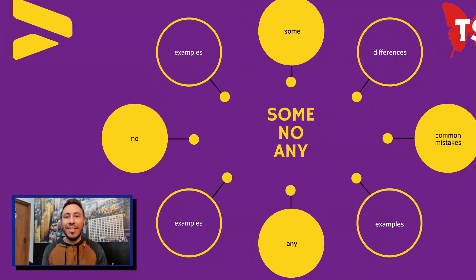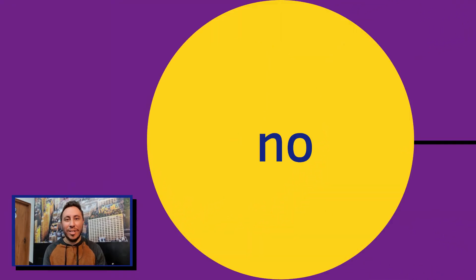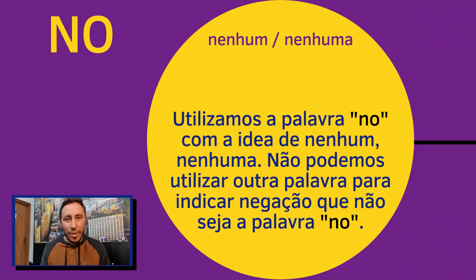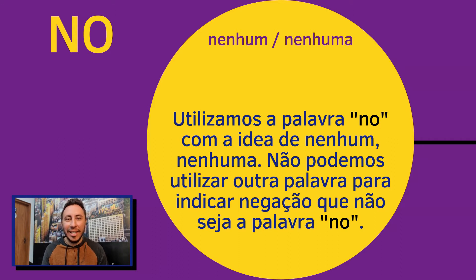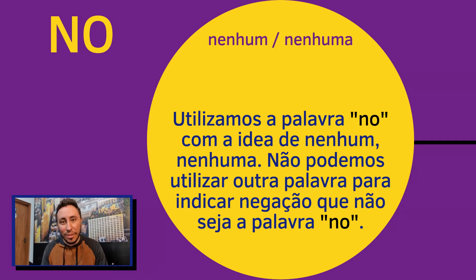Next word. Now let's take a look at the word no. The word no has only two possible translations: nenhum or nenhuma. When you create a sentence with the word no, you cannot use any other negative word in the sentence. No will be the only word in the sentence to indicate the negative, and the translation of no will never change — it will always be nenhum, nenhuma. It's important to emphasize that the word no can be used with singular and plural words.